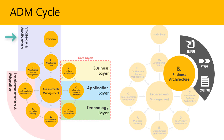The Strategy and Motivation extension enables the modeling of stakeholders, drivers for change, business goals, principles, and other requirements of the enterprise. These elements can be used to support requirements management — including the preliminary and architecture vision phases — establishing high-level business goals, architecture principles, and initial business requirements. They're also relevant to the change management phase. The Implementation Migration extension enables the modeling of portfolio and project management, gap analysis, and transition and migration planning.